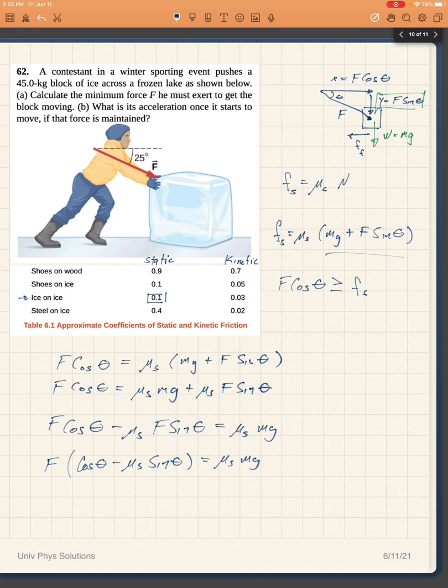And now I can just divide that quantity in parenthesis through so I get that f is equal to mu s mg over cosine of theta minus mu s sine of theta.